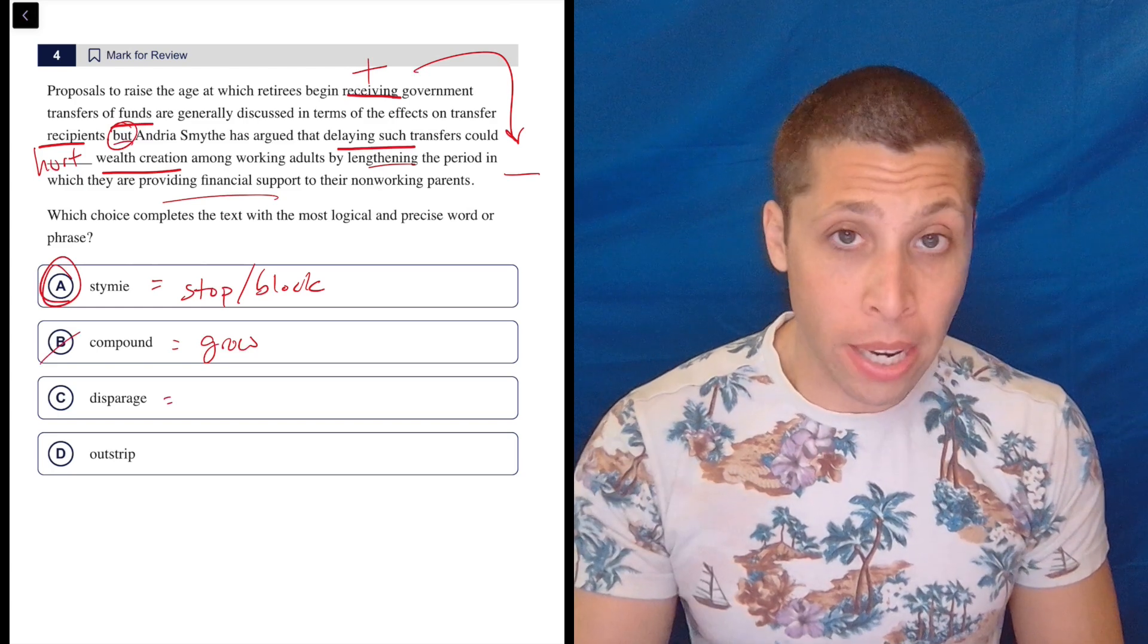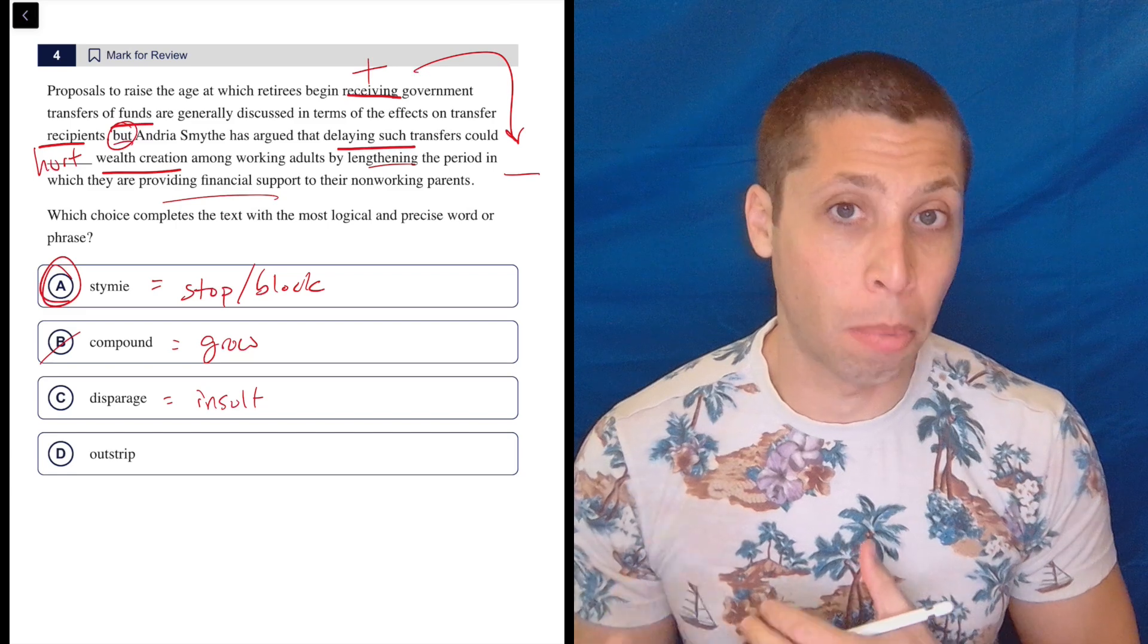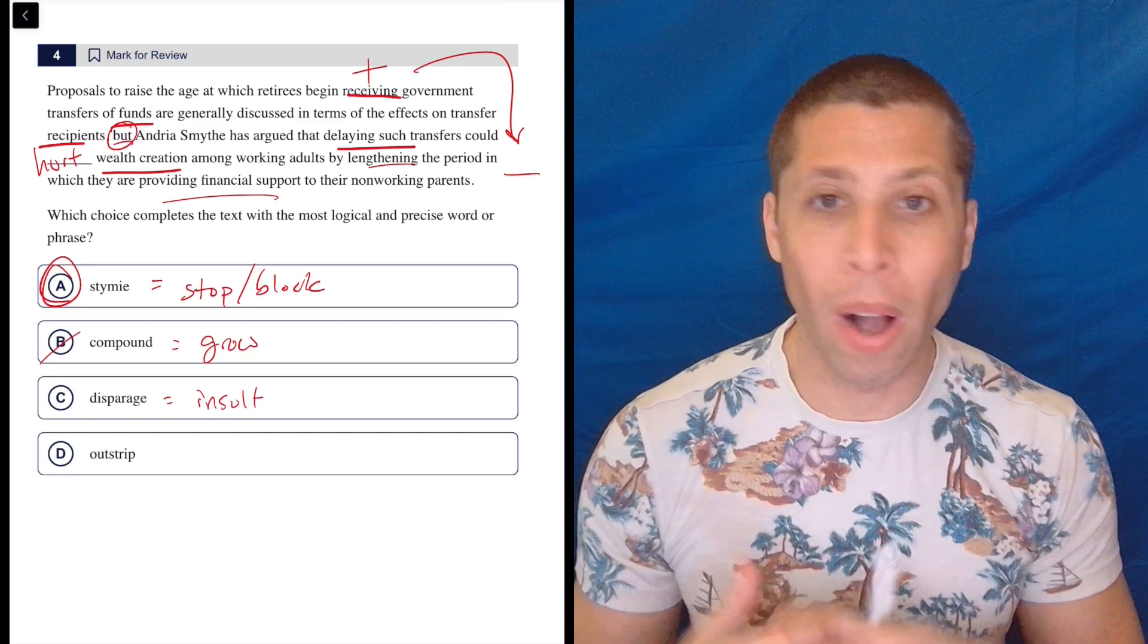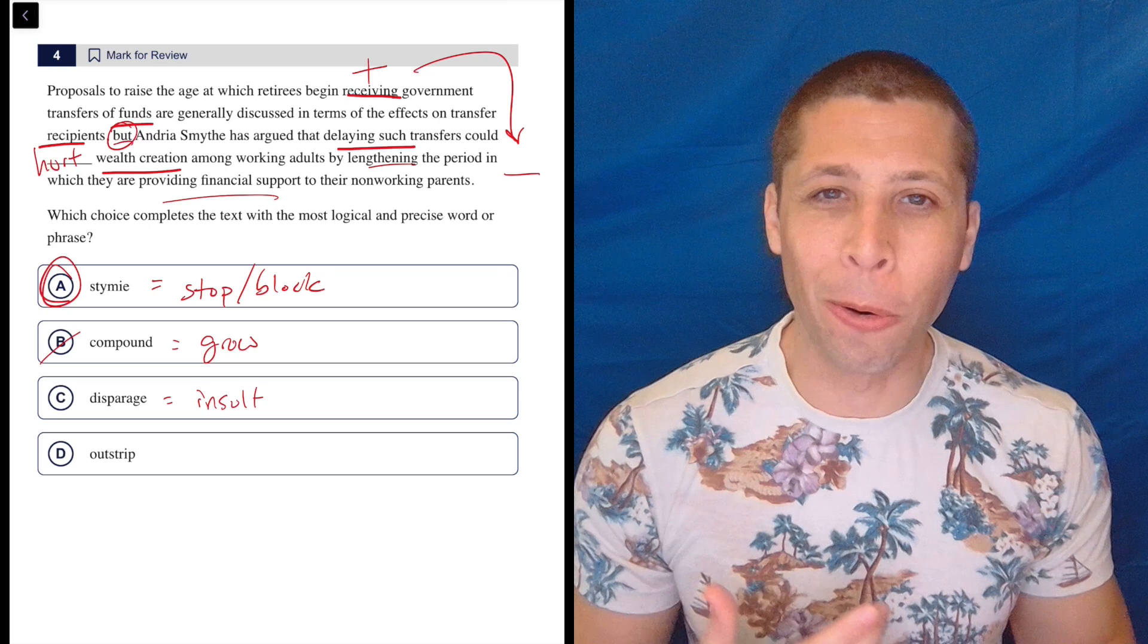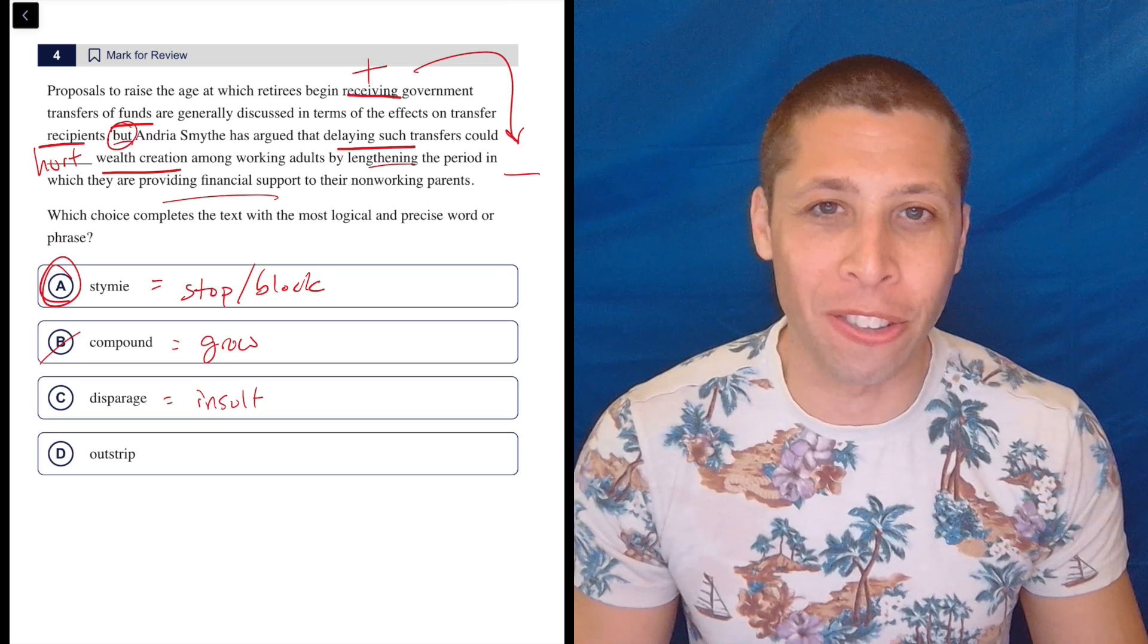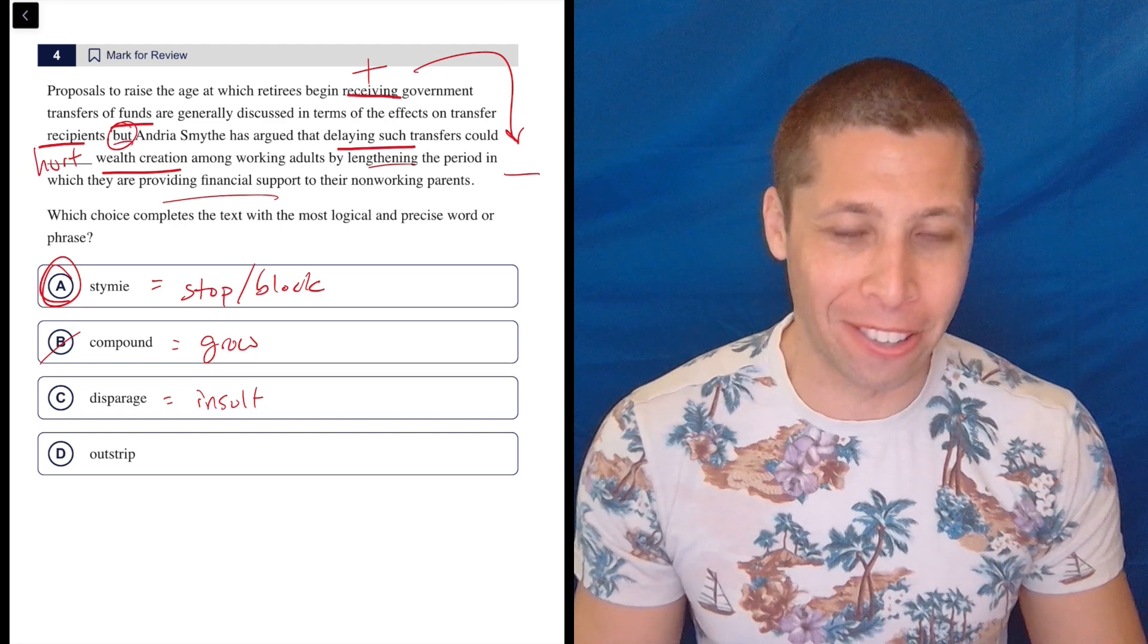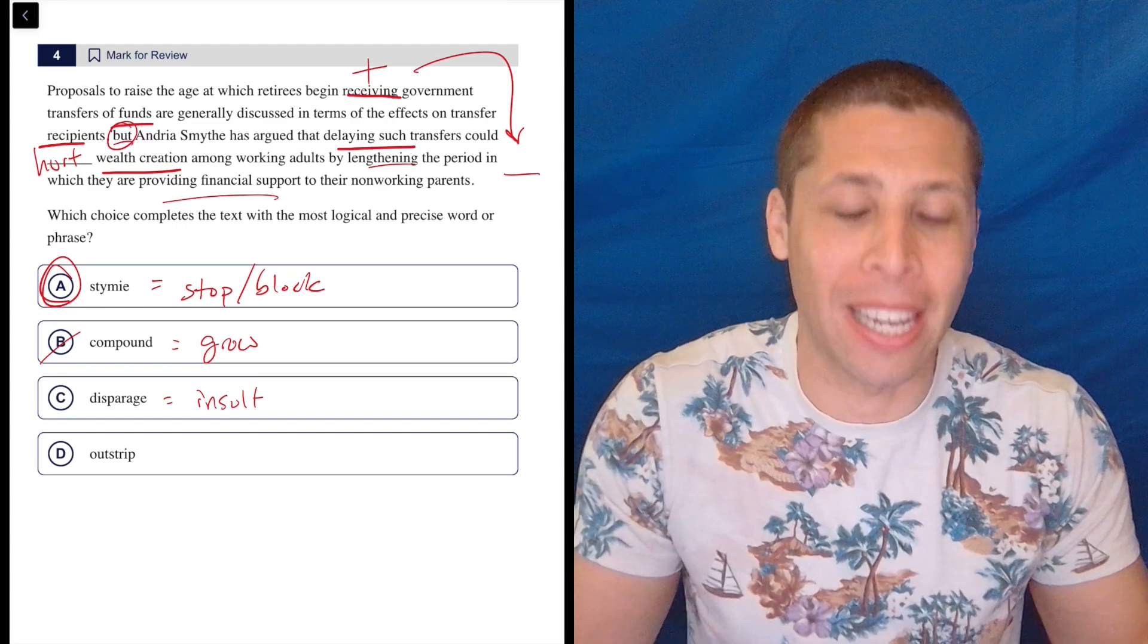Now disparage doesn't make any sense. It's definitely a negative word, but to disparage is to kind of insult. You might disparage a person, but you're not really going to disparage wealth creation. That would be saying that making money is bad. So maybe some radicals would want to do that and say like, yeah, let's go all just live in the woods. But we're not talking about that here. This is definitely wrong.